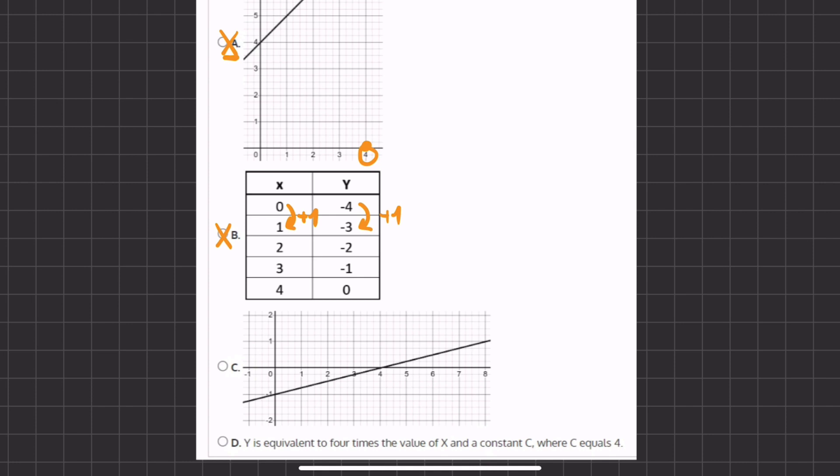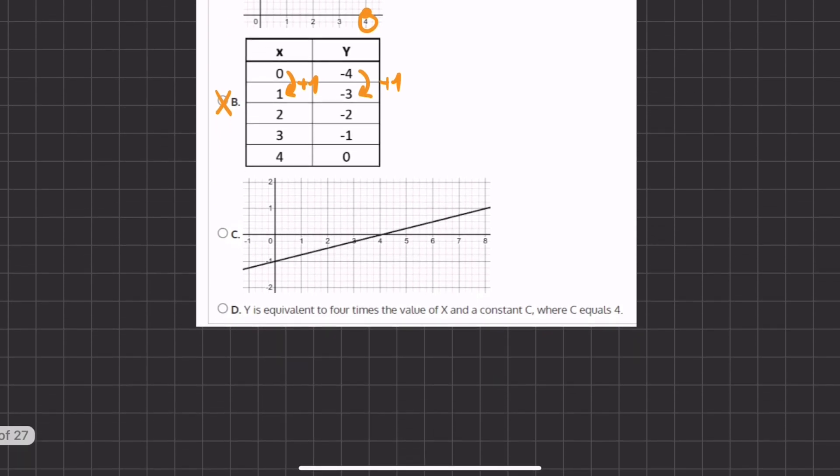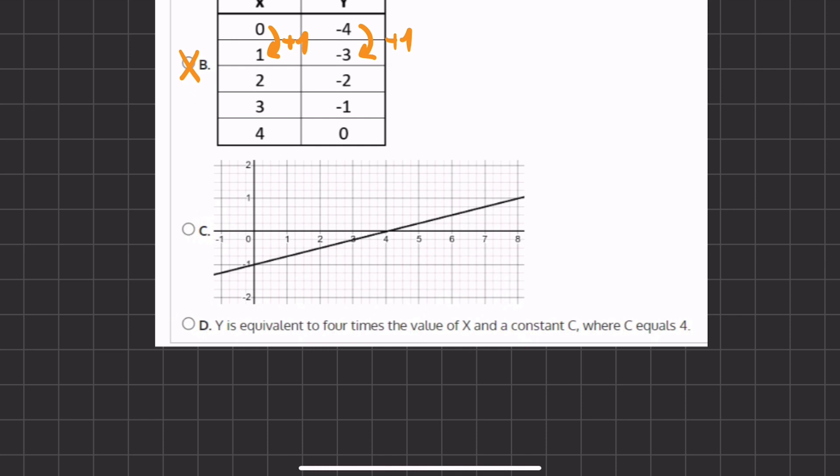Alright, and now let's move on to C. Here, we can see that, let's zoom this in. If we take a look at this linear function, we can recognize two points that are also given to us in our original table. Here we have the point (4, 0), and here we have the point (8, 1).